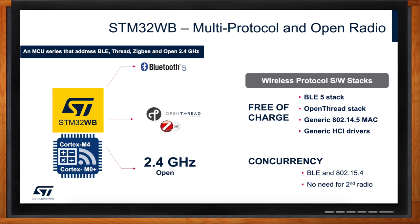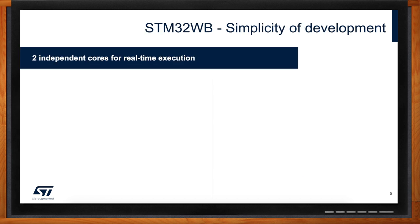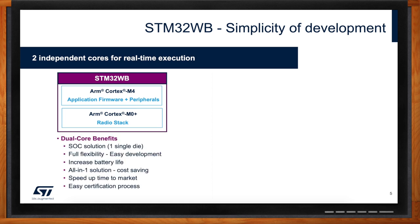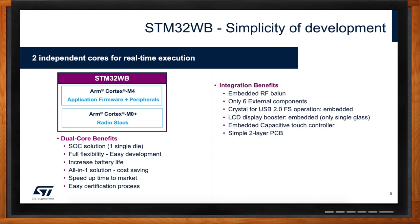There are many hardware benefits. The first is a dual-core architecture — you don't need an external controller since it's already inside, giving you better integration, cost, security, and lower power, which extends battery life. The dual-core design contributes significantly to the integration advantages across multiple dimensions.